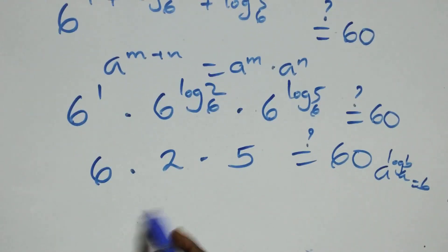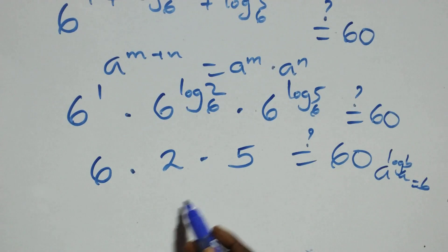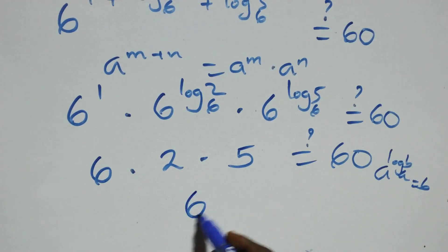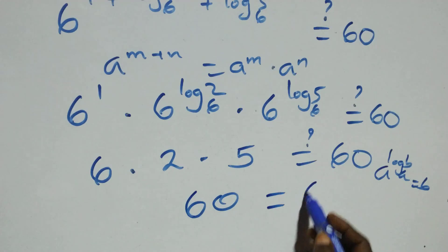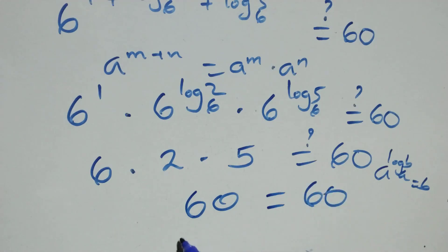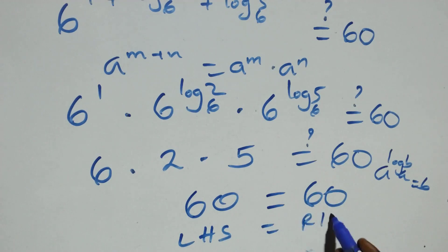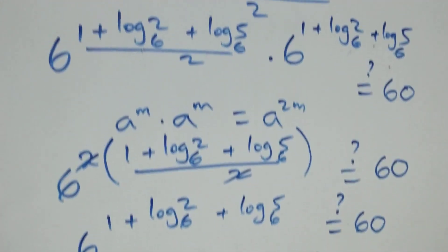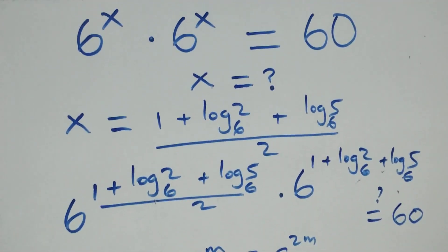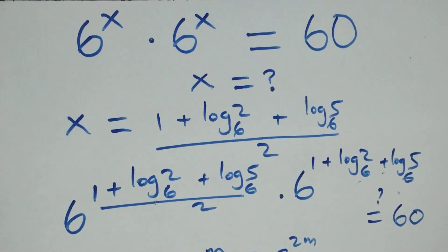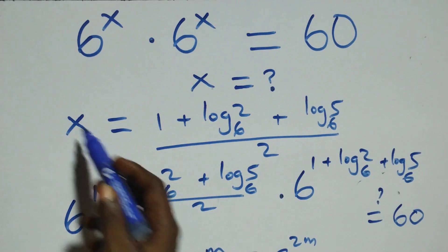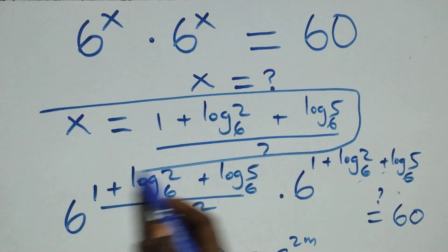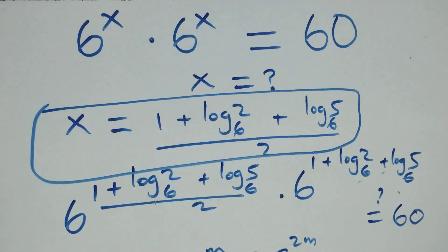6 times 2 gives 12, then 12 times 5 gives 60, which equals 60 on the right side. So left-hand side equals the right-hand side. Therefore, we conclude that x equals 1 plus log(2 to base 6) plus log(5 to base 6), all over 2, satisfies this given problem.